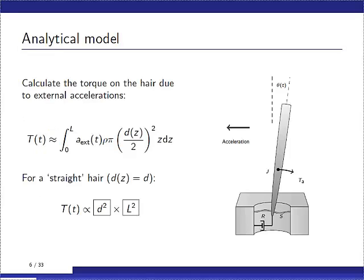So here you see, again, a model of the hair. And if you assume an acceleration which is perpendicular to the hair, you can compute, calculate the torque which is generated on that hair due to the acceleration. And if you consider the hair to be straight, because that is for analysis purposes, you will find that the torque is actually proportional to the diameter squared and the length of the hair squared.